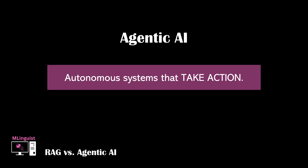Moving on to agentic AI. Agentic AI refers to autonomous systems that don't just answer questions, but also take action. These systems break down goals, plan, adapt, and execute across multiple steps without human intervention.